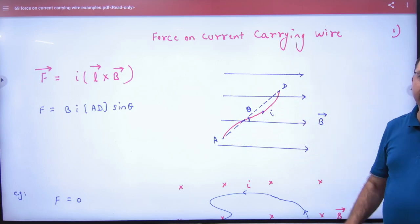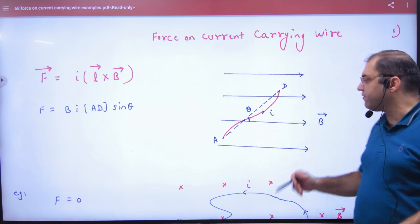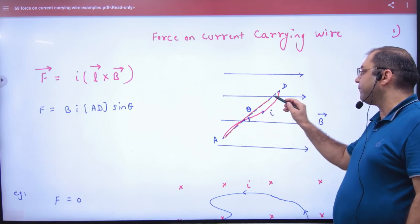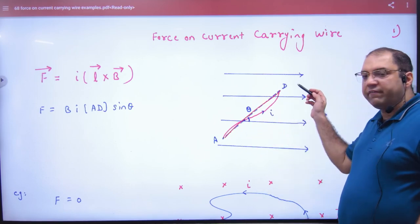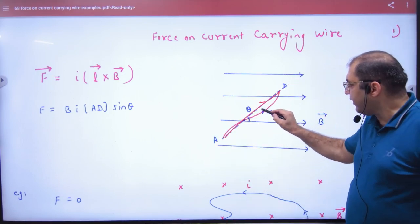If the current-carrying wire is AD, then you have to take displacement from A to D. You have to join A to D. The length is AD vector or DA vector. Where is the current? A to D. What will we take? AD vector.